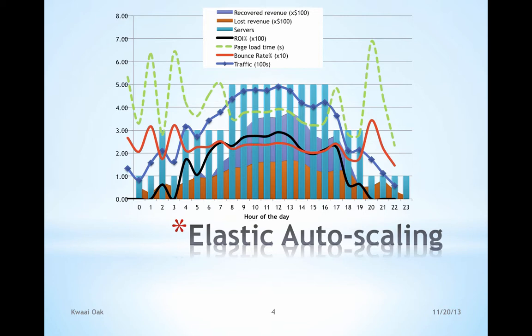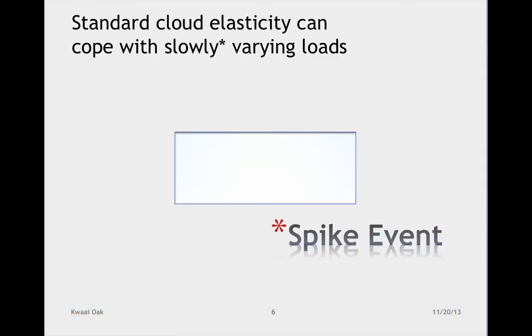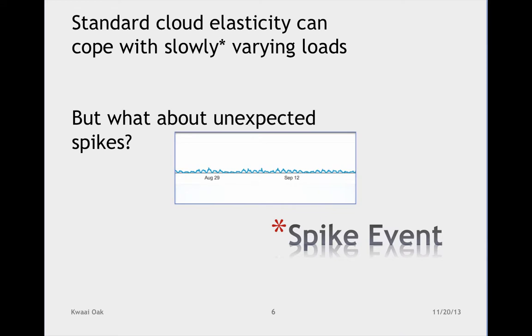So now we've talked about standard elasticity — I hazard that most public-facing platforms have some sort of system that looks like this. What is hyper-elasticity? This is where systems are stretched beyond their elastic limit and maybe even to the breaking point. We deal with what are called spike events. Standard cloud elasticity can cope with slowly varying loads — you can see it bouncing along day by day, doing really well. But what about the unexpected spike?